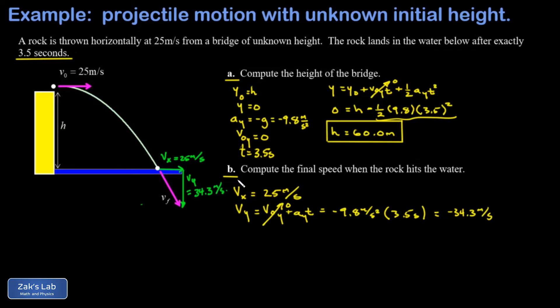Finally, to answer the question, we needed the final speed when the rock hits the water. And that's the hypotenuse of this triangle that I've drawn. So my final speed, which I called VF in the diagram, is going to be the square root of the sum of the squares of the legs here. So that's 25 squared plus 34.3 squared.